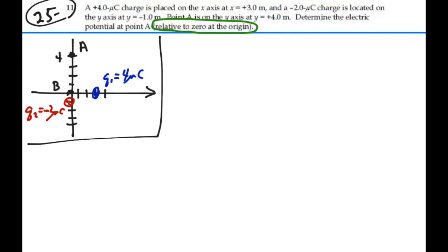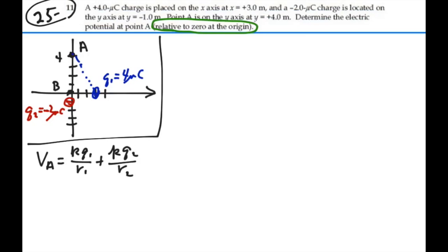We're going to use the principle of superposition, and we'll say that the potential at A is equal to KQ1 over R1 plus KQ2 over R2. These are scalars that we're adding together — point charges each contributing to that point A. We're going to have to know what R1 is. If we look at this triangle, we have ourselves a 3-4-5 triangle, so the distance of Q1 from point A is going to be 5 meters. And the distance of Q2 from A is also going to be 5 meters, because we're strictly 5 meters away along the y axis there.